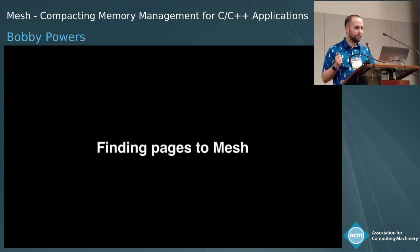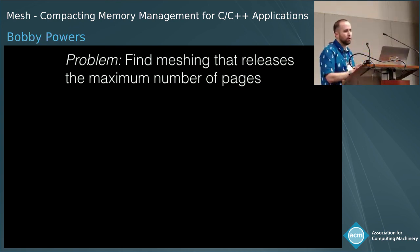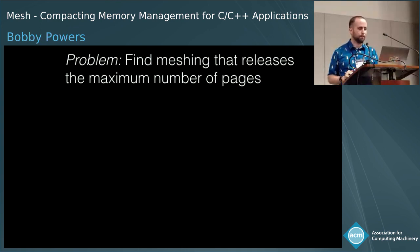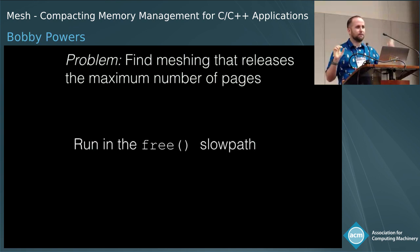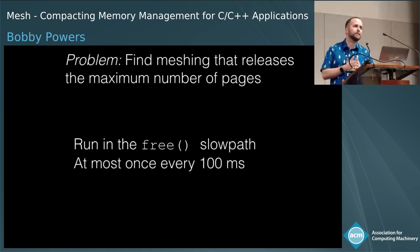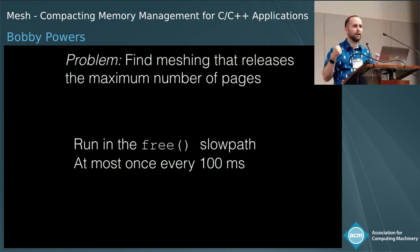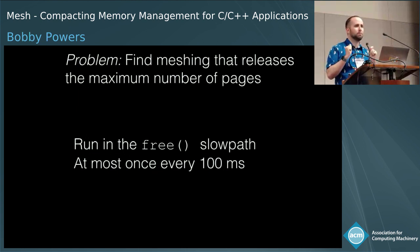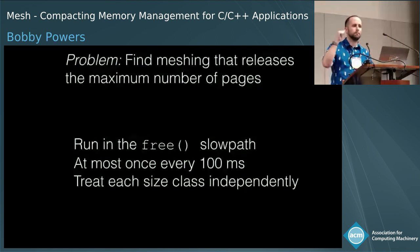Now for how we actually find pages to mesh. More formally, at a given point in time, we want to release the maximum number of pages back to the operating system. We run this in the free slow path to ensure we work without modification for any existing program. We run it at most every 100 milliseconds to amortize costs and avoid needless work — it would be wasteful to compact the heap if the program is immediately going to free those objects. We also treat each size class independently.